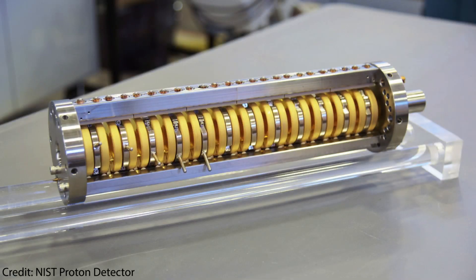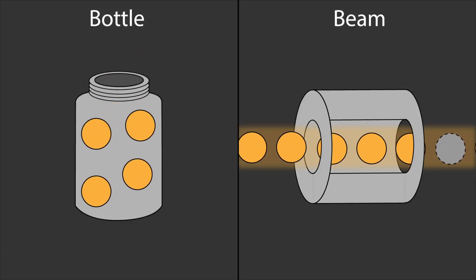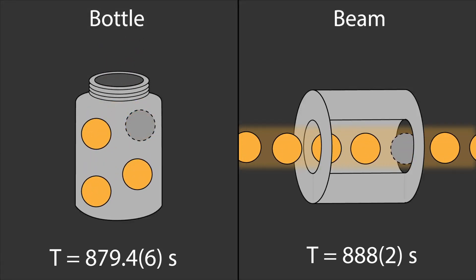And these two methods give different lifetimes, with the neutrons in the beam having on average a lifetime that is 10 seconds longer than when measured using the bottle method. This has been very perplexing, as the difference is well beyond noise.